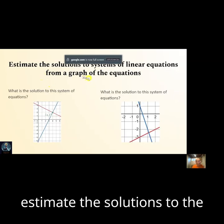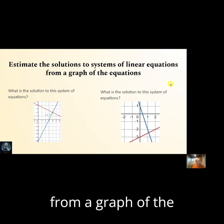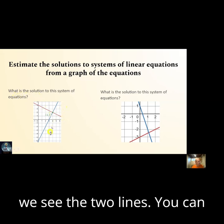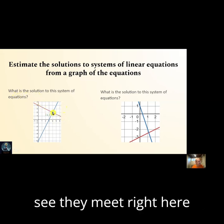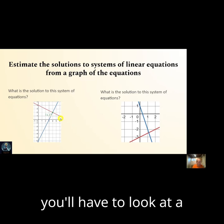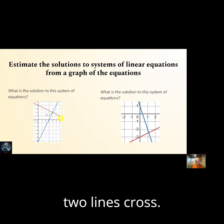Estimate the solutions to the system of linear equations from a graph of the equations. So let's look at this. What is the solution? So we see the two lines, you can see they meet right here, and that is the point (4, 2). So you'll have to look at a graph and tell me where the two lines cross.